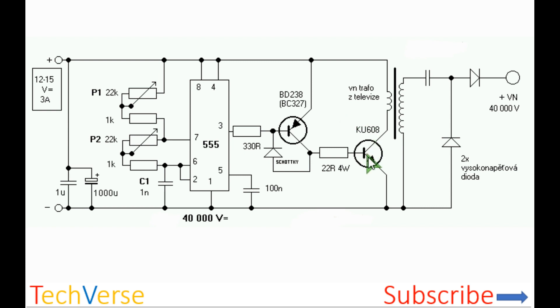When this transistor is on, current will flow from the 12 volts through the primary winding and to ground. Basically, it's a flyback converter.